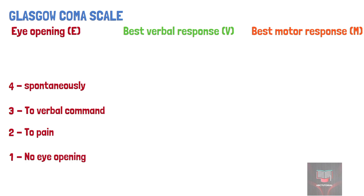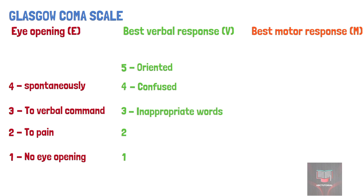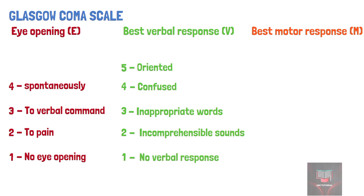The best verbal response score ranges from 1 to 5 and is scored as 5 if the speech is oriented in time, place, and person. It is given a score of 4 when the speech is disoriented, that is when the patient is confused. It is scored 3 when the patient is making inappropriate words, and 2 when the patient is making incomprehensible sounds, and a score of 1 if there is no verbal response.